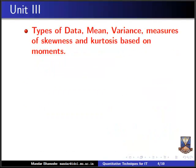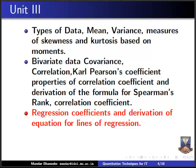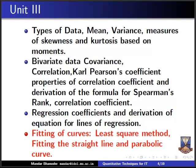In unit three, our statistics portion begins. We start with preliminary statistics: types of data, mean, variance, measures of skewness and kurtosis based on moments. Then we move to bivariate data, covariance, and correlation — including Karl Pearson's and Spearman's rank correlation coefficients. We then cover regression coefficients and equations of lines of regression. Finally, unit three includes curve fitting using the least square method to fit a straight line and a parabolic curve.